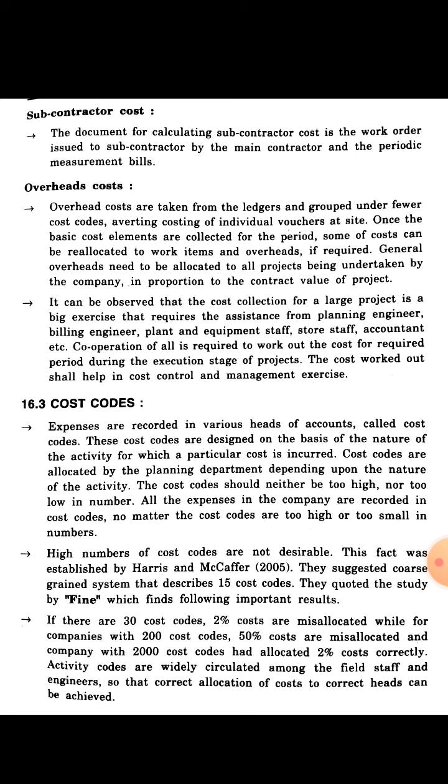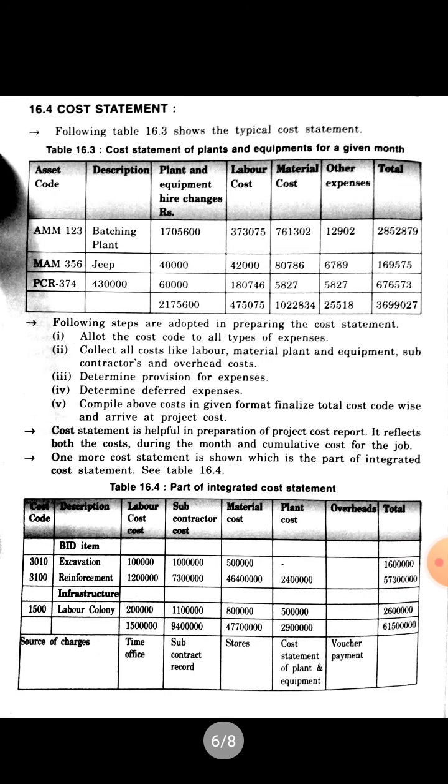Another topic is the cost statement. A cost statement table for plant and equipment for a given month is presented. There are seven main columns: asset code, description, plant and equipment hire charges, labor cost, material cost, other expenses, and a total column which is the summation of all plant and equipment hire charges, labor cost, material cost, and other expenses.